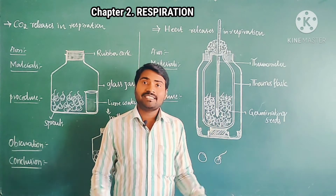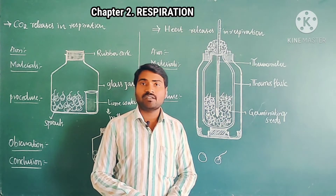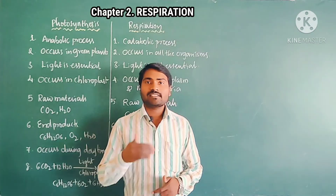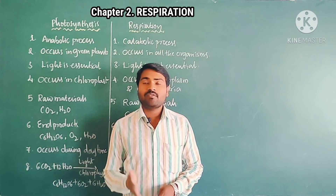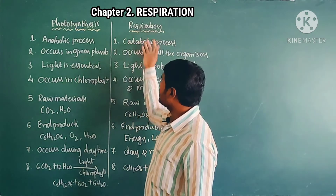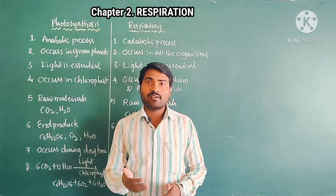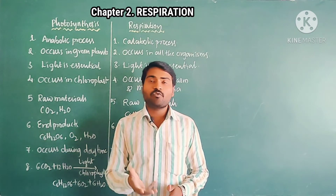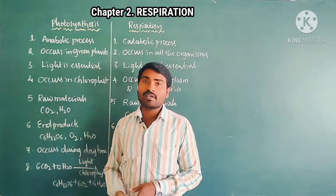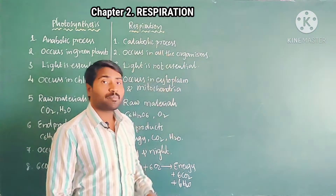Last topic: let us see the differences between photosynthesis and respiration. First point: photosynthesis is an anabolic process — 'ana' means making or producing something. Glucose is synthesized in photosynthesis. Respiration is a catabolic process — 'cata' means breakdown. Here glucose is broken down. Hence photosynthesis is anabolic and respiration is catabolic.